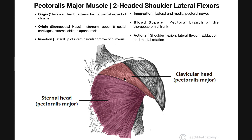Regardless of which head we're talking about — clavicular head, sternocostal head, or even the abdominal head — all three parts are going to insert on the lateral lip of the intertubercular groove of the humerus. The humerus anteriorly has a groove starting between the greater and lesser tubercles called the intertubercular groove. As you go distally down the humerus, that groove has lips on either side: a medial lip and a lateral lip. The lateral lip is where the insertion of pectoralis major is. The medial lip is going to be the insertion for latissimus dorsi and teres major.